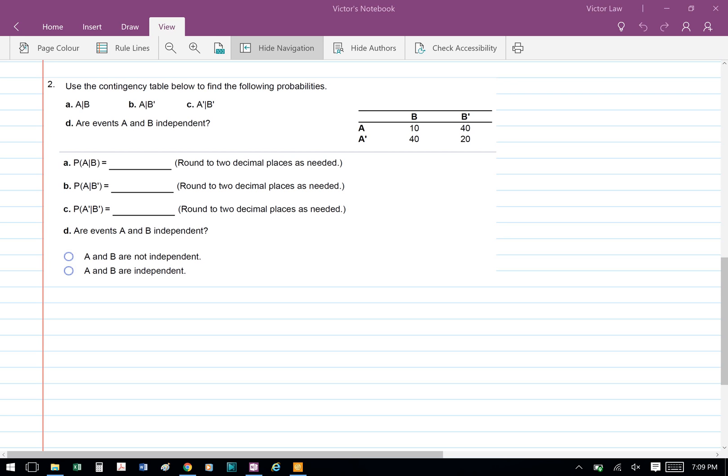Business Stat Chapter 4 Preclass Assignment Tutorial Question 2. Use the contingency table below to find the following probability.